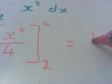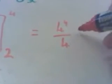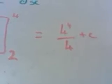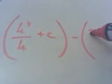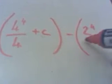So what we're going to do is we're going to substitute 4 in, so that's 4 to the power 4 divided by 4 plus my c value, and then we're going to subtract—we're going to substitute the number 2 in for x, so we've got 2 to the power 4 over 4.